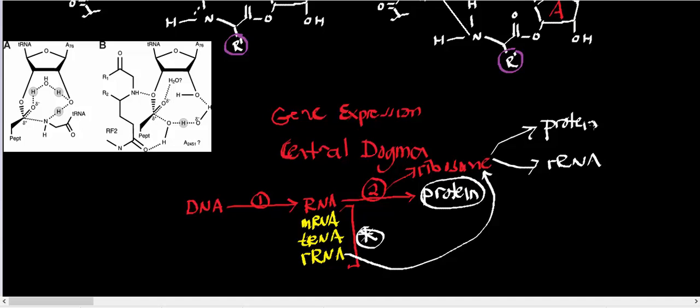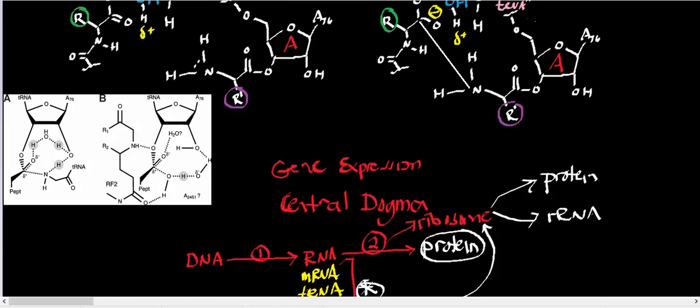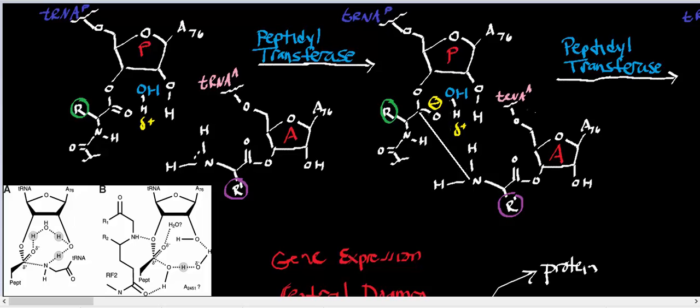This process that we're talking about is the central dogma of molecular biology, going from DNA to RNA, these three types, mRNA, tRNA, and rRNA, to protein. But the thing they often leave out is that ribosomal RNA is the catalytic component of the ribosome. And hopefully, we're going to get in this mechanism kind of an understanding of how this works.